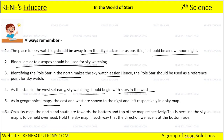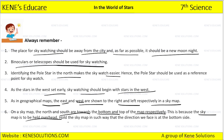In a geographical map, the east and the west are shown to the right and left respectively, but in the sky map, north and south are towards the bottom and top respectively. This is because the sky map is to be held overhead. Hold the sky map in such a way that the direction you face is at the bottom side.